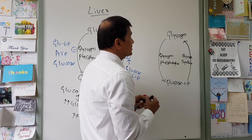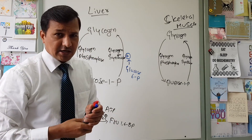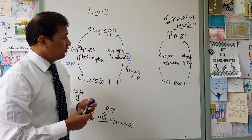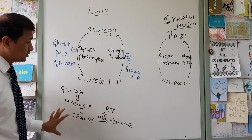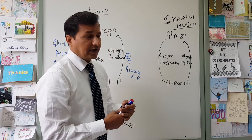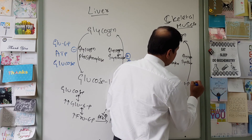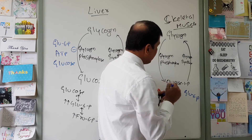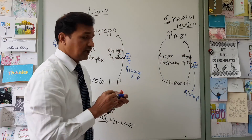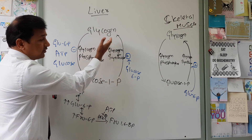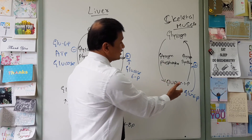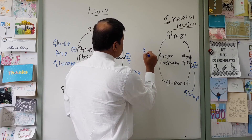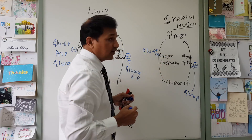In skeletal muscle, glycogen synthesis and degradation are also controlled by glycogen synthase and glycogen phosphorylase. Whenever glycolysis is saturated, there is accumulation of glucose 6-phosphate in the cytoplasm of skeletal muscle. This glucose 6-phosphate has a positive effect on glycogen synthase and a negative effect on glycogen phosphorylase — very similar to what occurs in the liver.